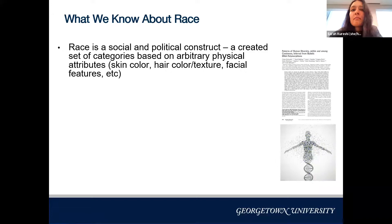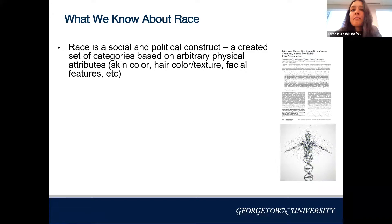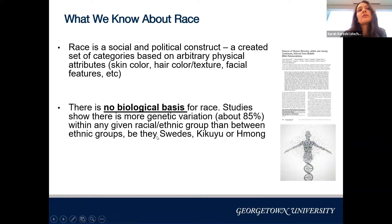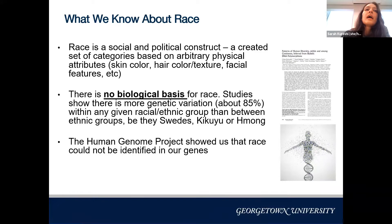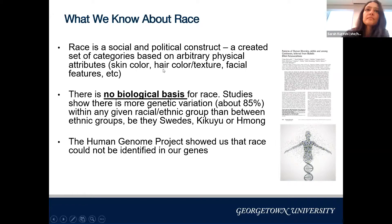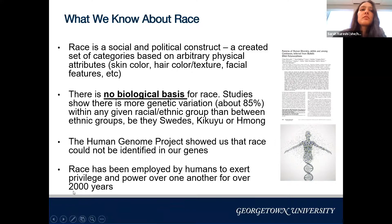Race is a social and political construct — it creates categories based on arbitrary physical attributes like skin color, facial features, and hair. There's no biological basis. Multiple studies show there's more genetic variation within any given racial or ethnic group than between groups. The Human Genome Project showed that race cannot be identified in our genes. Bill Clinton noted in 2000 that we are 99.9 percent genetically similar across all people.